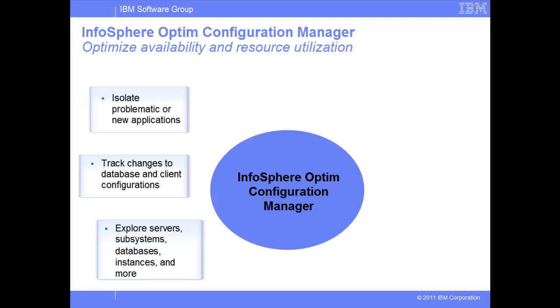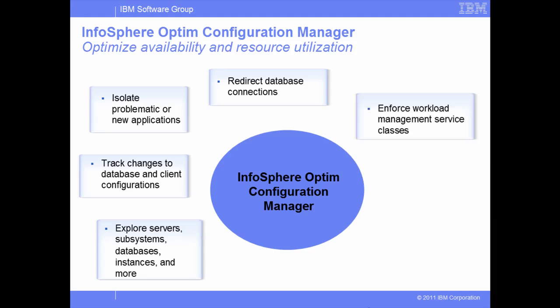Quickly isolate problematic or new applications to a specific DB2 for ZOS data sharing member, thereby preventing other applications from being affected. Redirect a database connection to a different DB2 for Linux, Unix and Windows database or to a different DB2 for ZOS subsystem. This can be useful when migrating to a new server or when a server is down. Force application client transactions to comply with appropriate workload management classification rules defined in DB2 for ZOS Workload Manager to meet service level agreements. Improve the efficiency of driver connection pooling by updating the workload balancing properties of client drivers for DB2 for ZOS and DB2 PureScale.